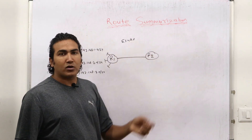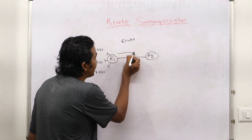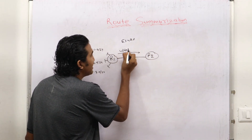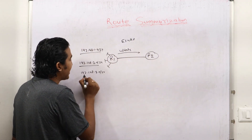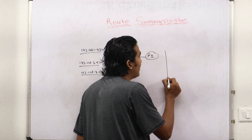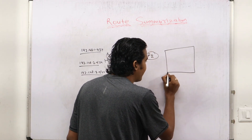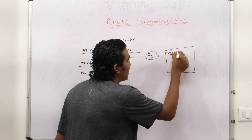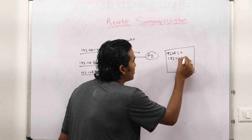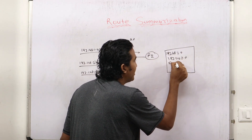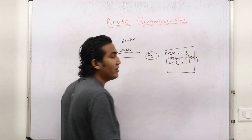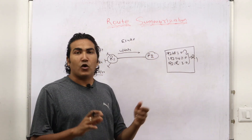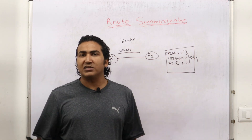After enabling EIGRP on Router 1 and Router 2, Router 1 will share one update message. In this update message, it will share all network information - this network, this network, and this network - three networks to Router 2. Router 2 will maintain one routing table. In the routing table, Router 2 will install these prefixes: 192.168.1.0, 192.168.2.0, 192.168.3.0 - all reachable via Router 1. So Router 1 has three prefixes and has advertised all of them to Router 2.